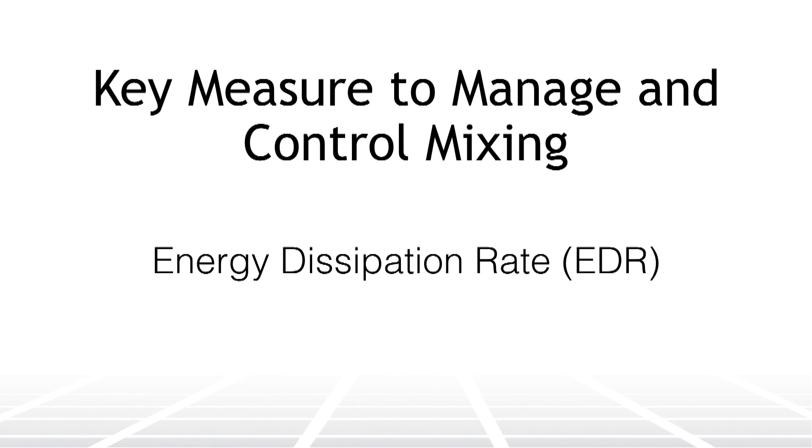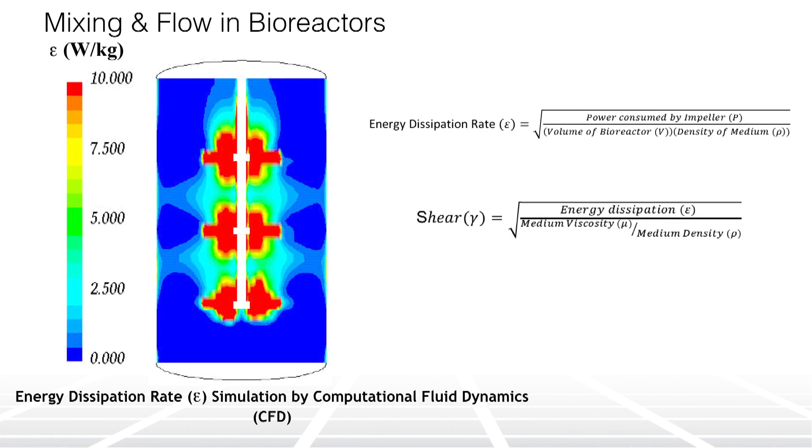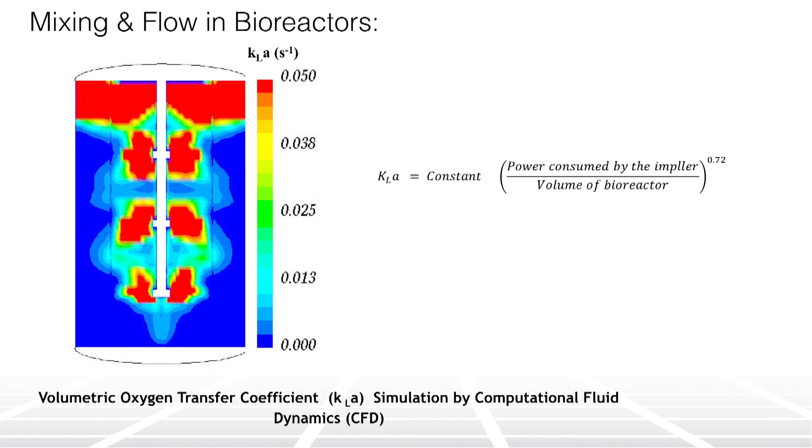Energy dissipation rate, also known as the power input per unit volume, is a key measure the industry uses to manage and control mixing and it is used in design of impellers and bioreactor scale up from process development to large scale manufacturing. Maintaining constant power input per unit volume ensures similarity of mixing, shear distribution and volumetric oxygen transfer rate as we scale up throughout the cell expansion phase and as we increase the scale of production.